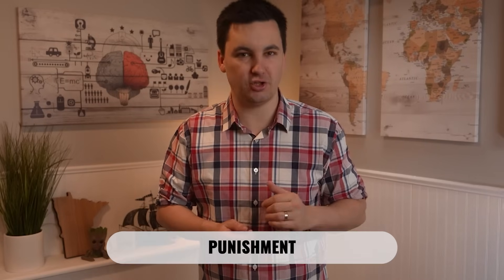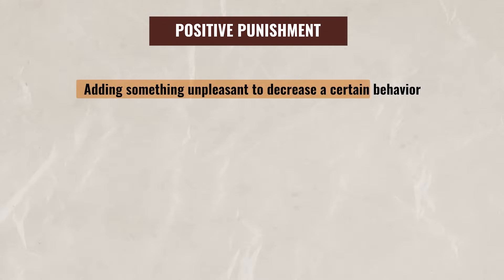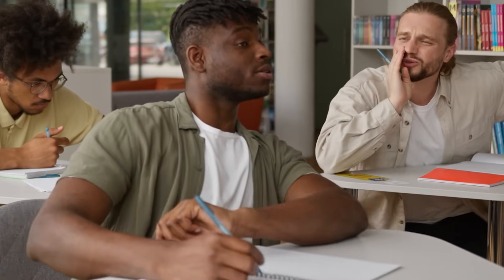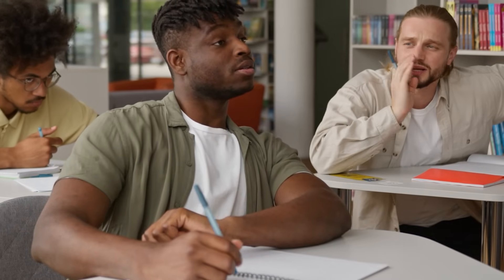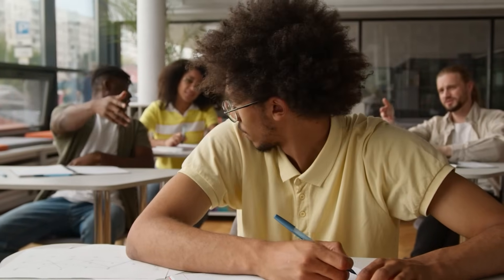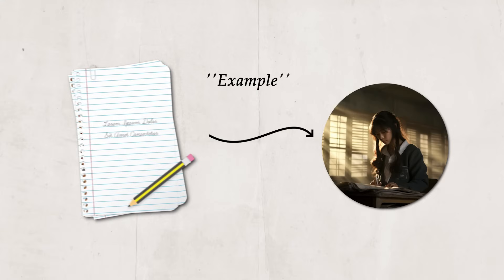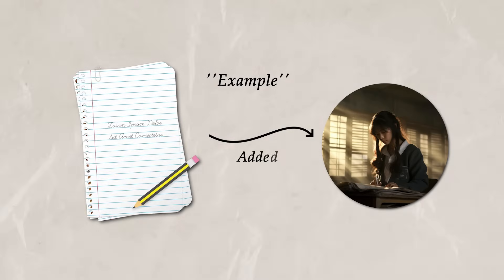Now let's say that instead of trying to increase a certain behavior, we actually want to decrease a behavior. Instead of using reinforcement, we would utilize punishment, which again can also be positive or negative. Positive punishment involves adding something unpleasant to decrease a certain behavior. For example, a student in your class keeps talking and disrupting class, and as a consequence, the teacher gives the student extra homework. The homework is being given to the student to reduce the disrupting behavior in the future. Notice that the homework is being added — that's what makes this a positive punishment.